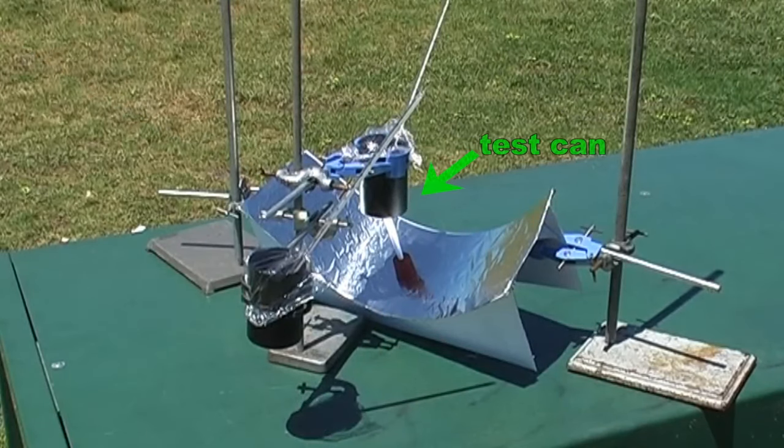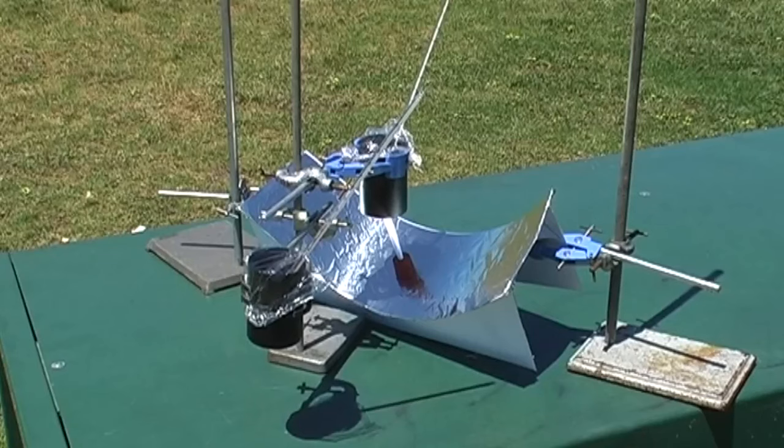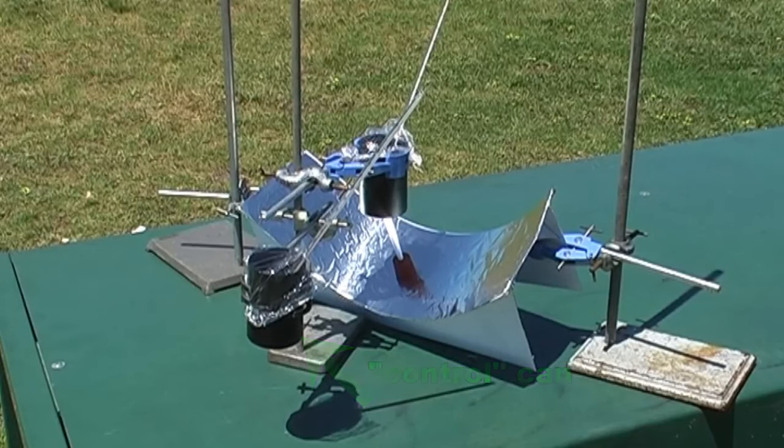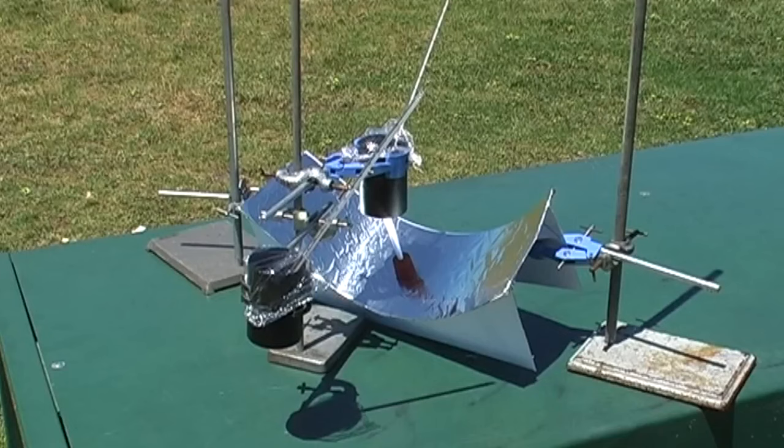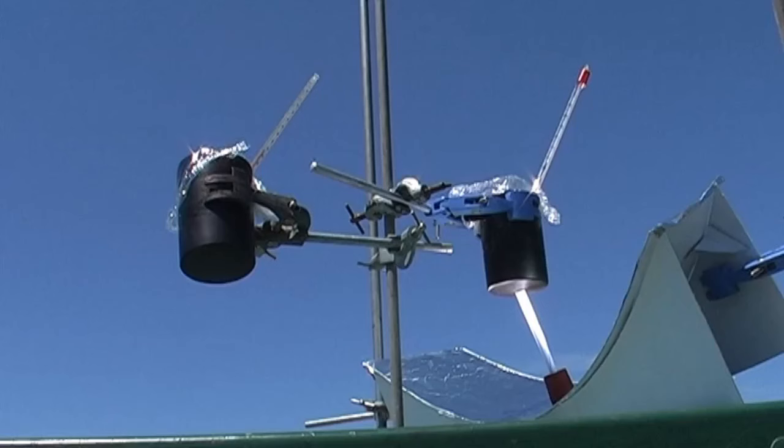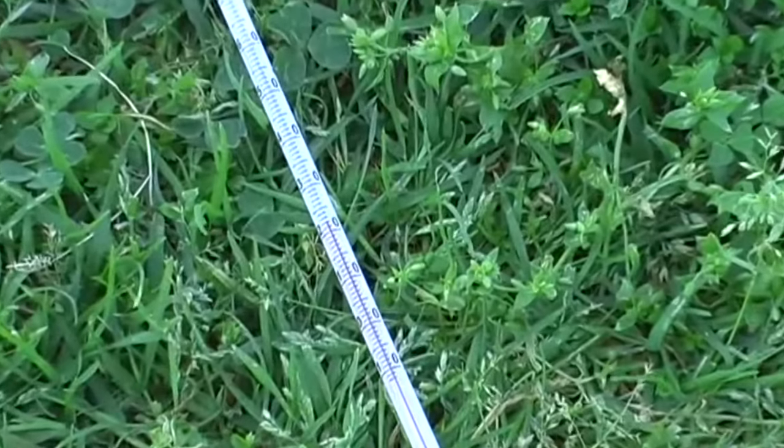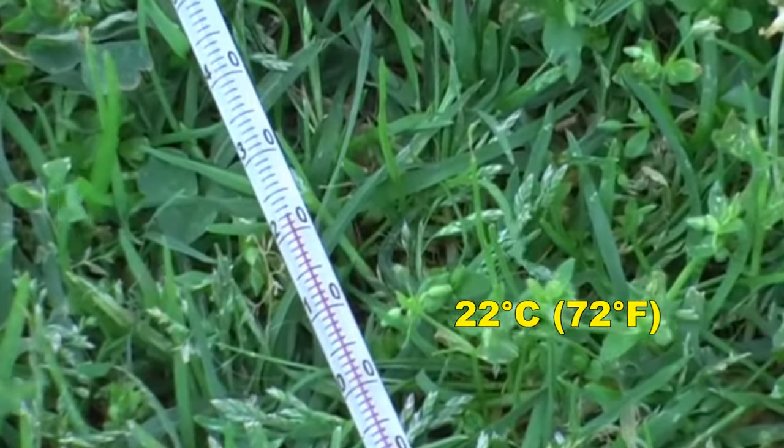A can of water placed here at the focal point is receiving direct sunlight, and a huge amount of reflected sunlight. While this can nearby, our control can, with the same amount of water in it, is only receiving direct sunlight. It's really obvious when you look at it from underneath. The air temperature in the shade on the day that we filmed was about 22 degrees Celsius.